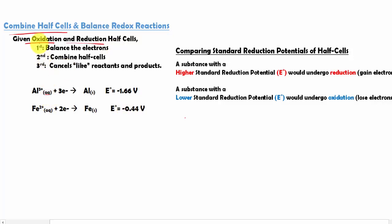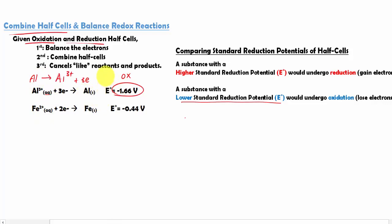In this case, we are not given in terms of oxidation and reduction, but we have the reduction potentials. The one with the lower reduction potential undergoes oxidation. So if we have -1.66 and -0.44, the -1.66 will undergo oxidation, which is the opposite of reduction, so we have to rewrite it. Once we have our oxidation and reduction half cells, we can now combine them together.